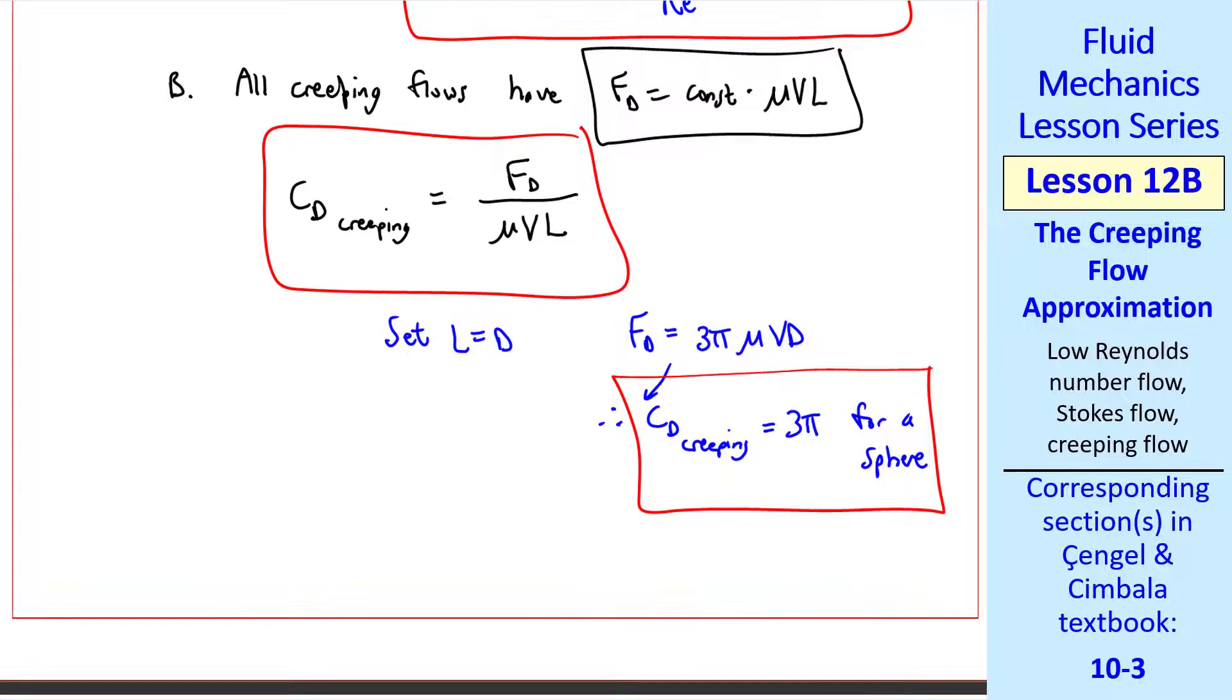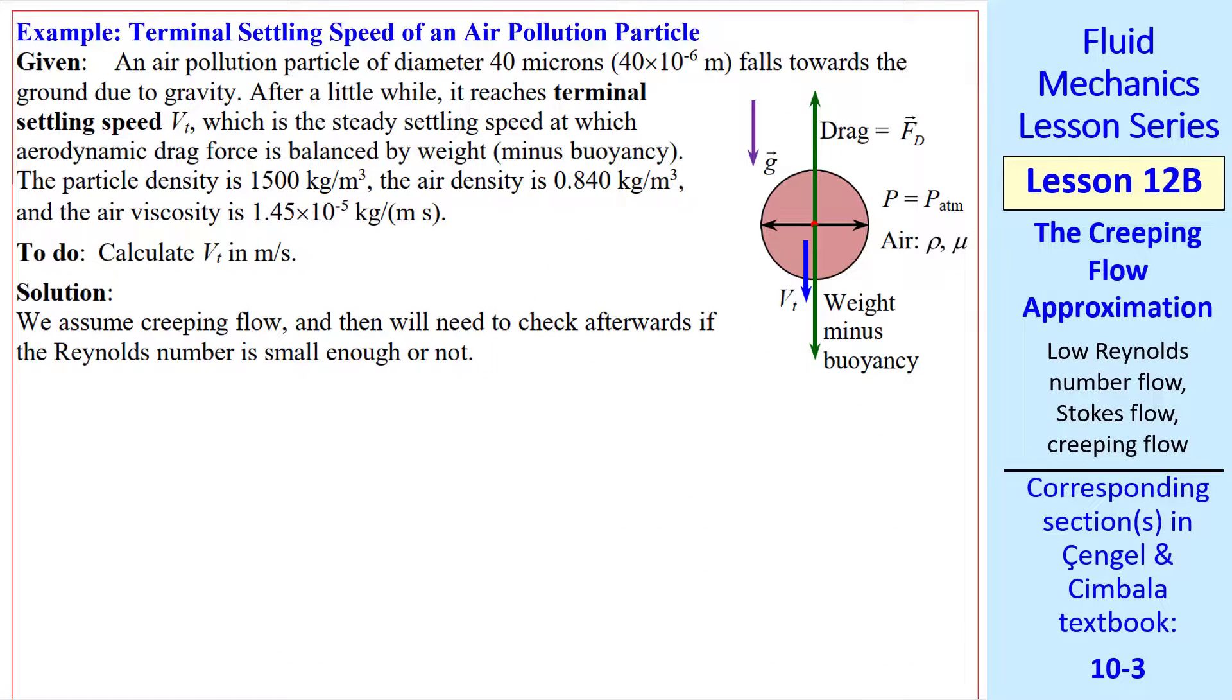Now let's do an example, namely let's calculate the terminal settling speed of an air pollution particle. I teach some air pollution courses as well, and we're typically dealing with very small particles measured in microns, where most of the time these particles settle in the creeping flow regime. In this problem, we're looking for the terminal settling speed.